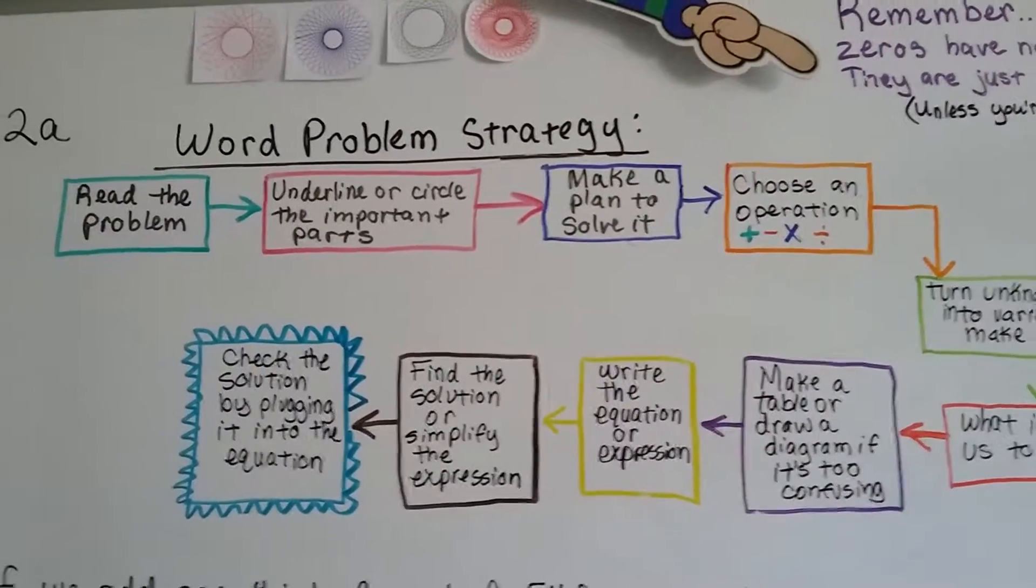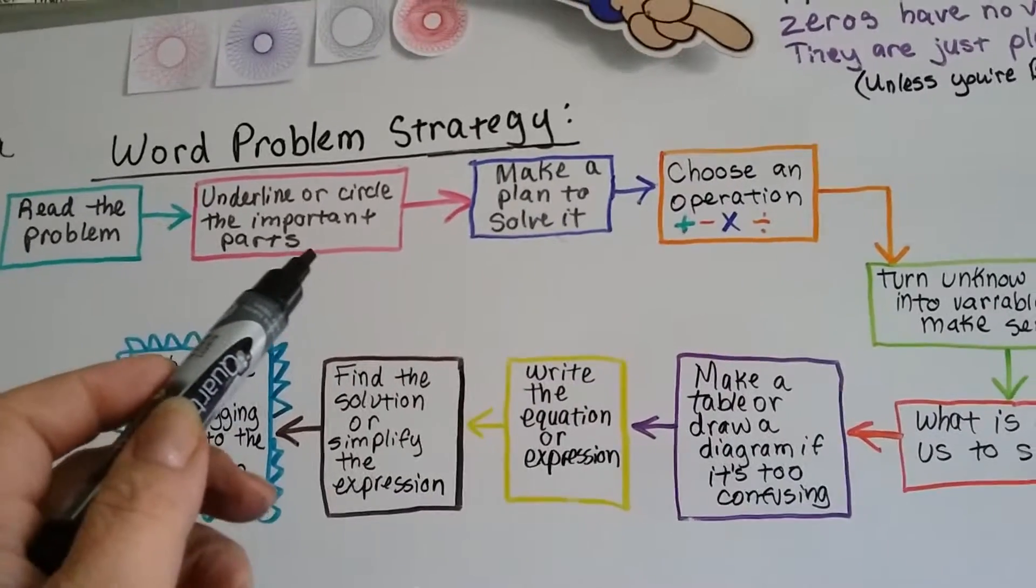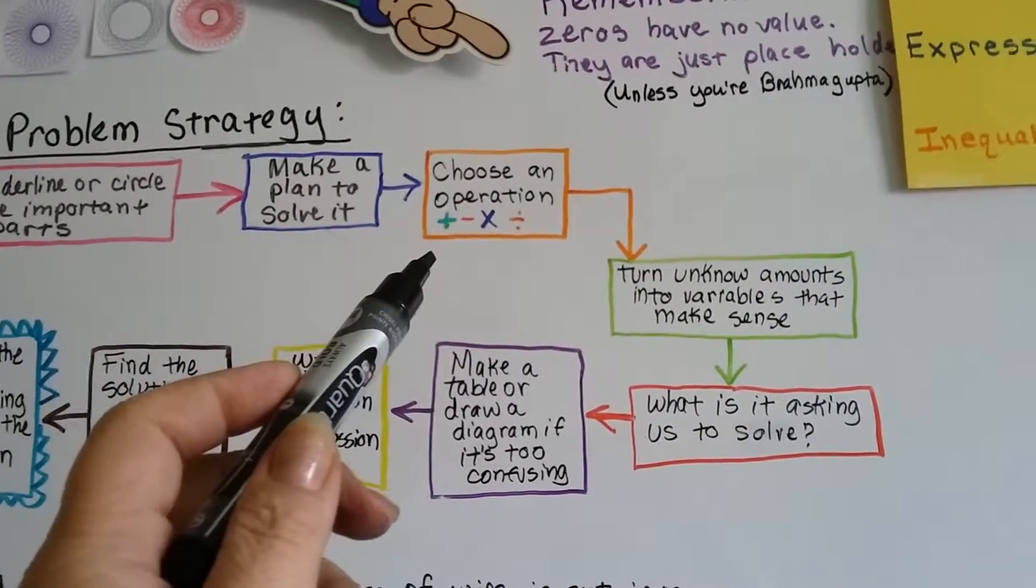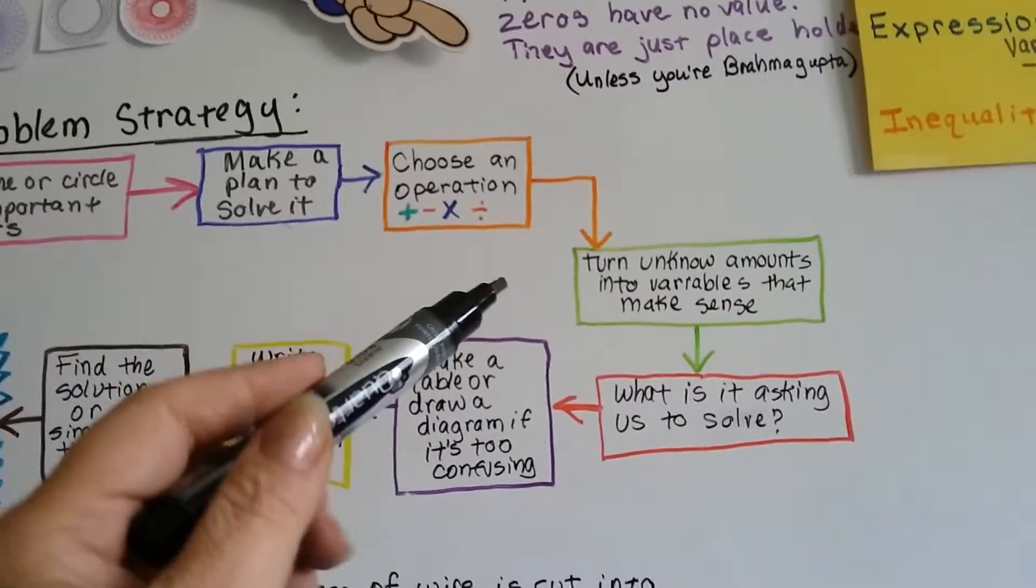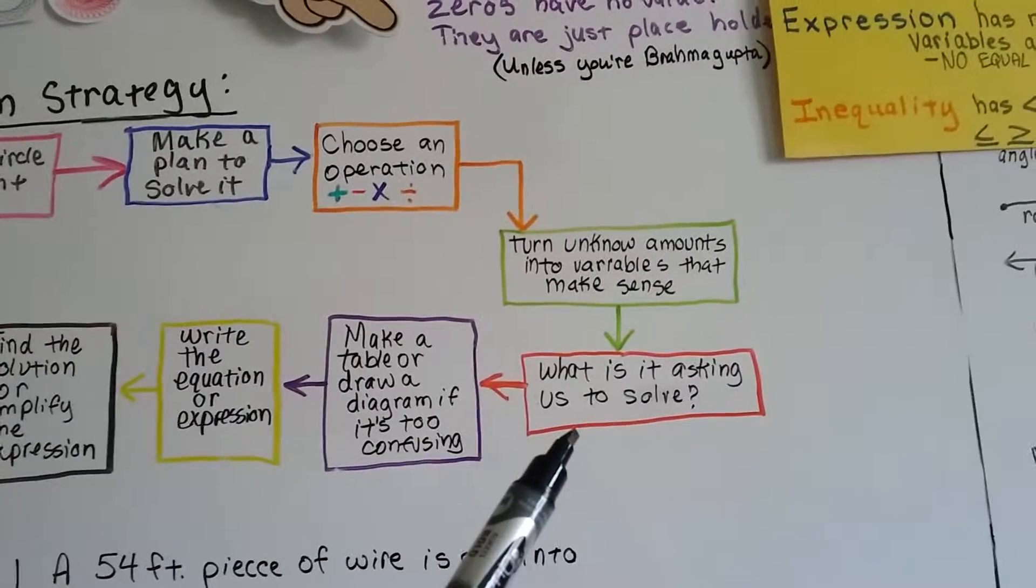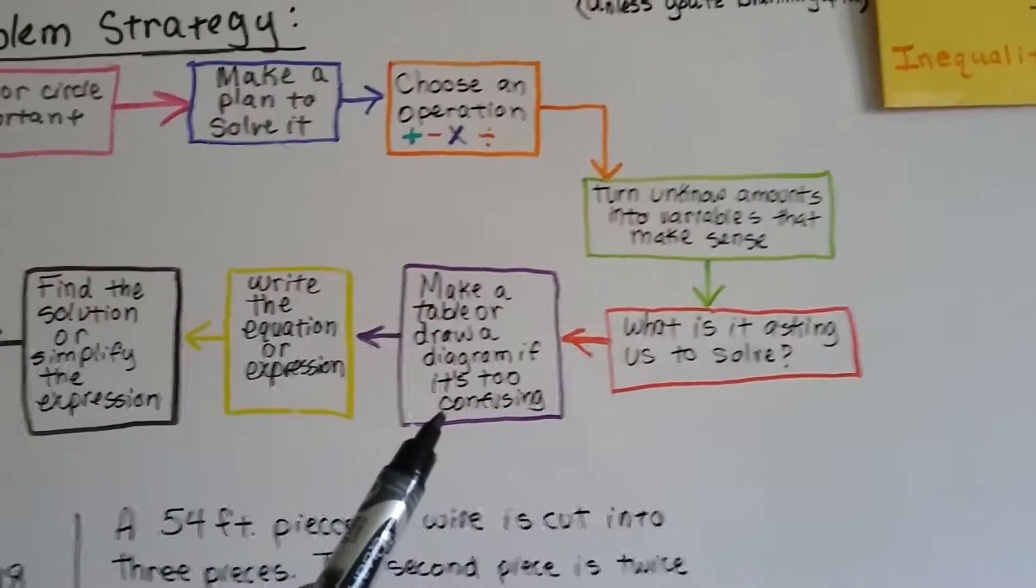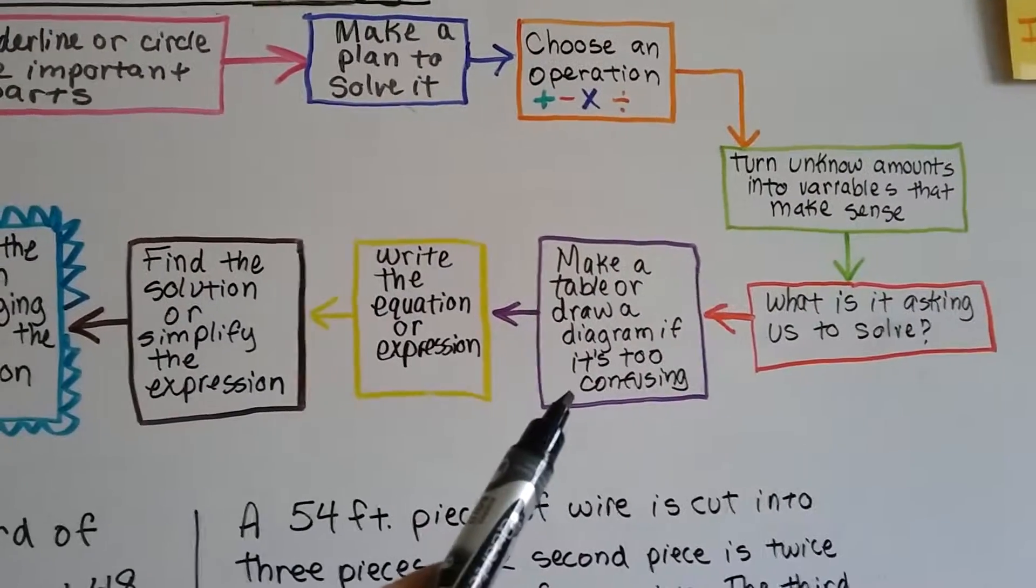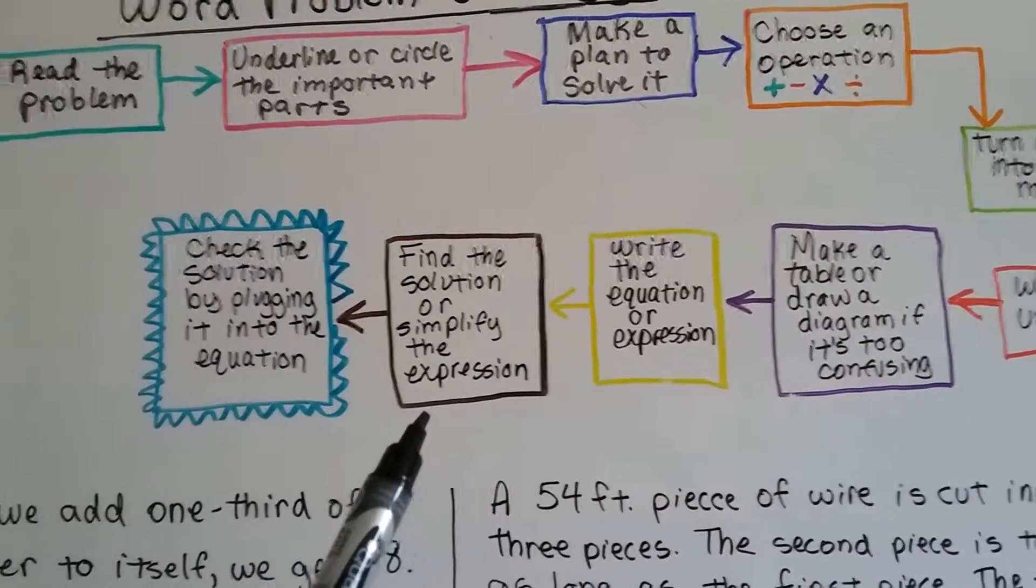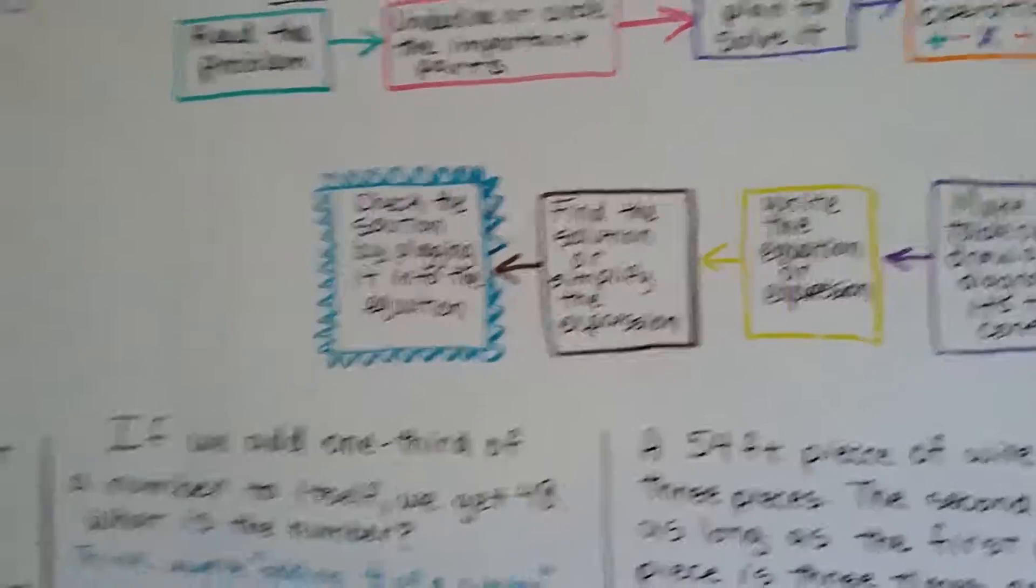When we do word problems we have to have a strategy. We need to read the problem, underline or circle the important parts. Make a plan to solve it by choosing an operation: add, subtract, multiply, or divide. Turn the unknown amounts into variables that make sense. Ask ourselves what is it asking us to solve. We can make a table or draw a diagram if it's still too confusing. Then we can write the equation or expression, find the solution or simplify the expression, and check it by plugging it into the equation to see if it works.